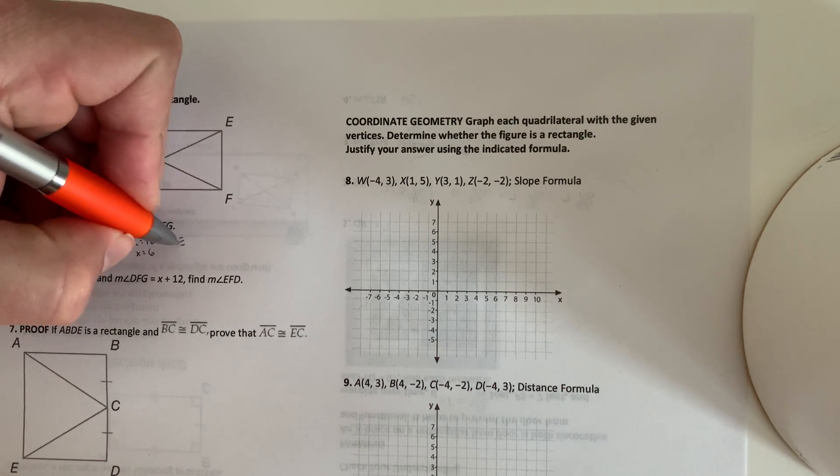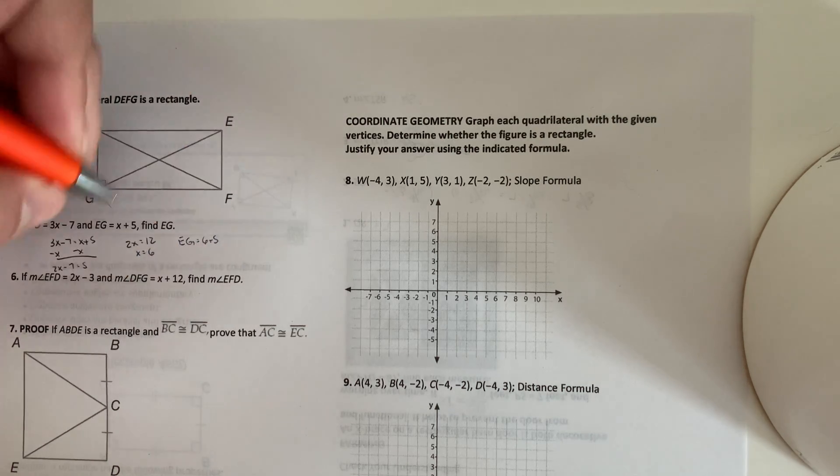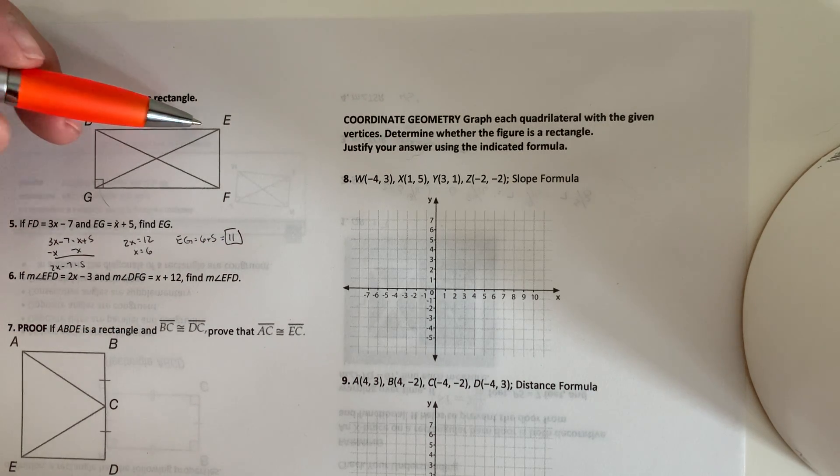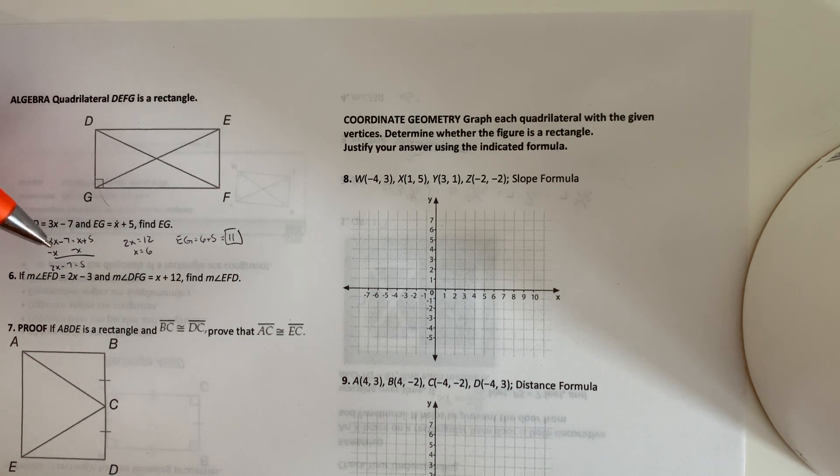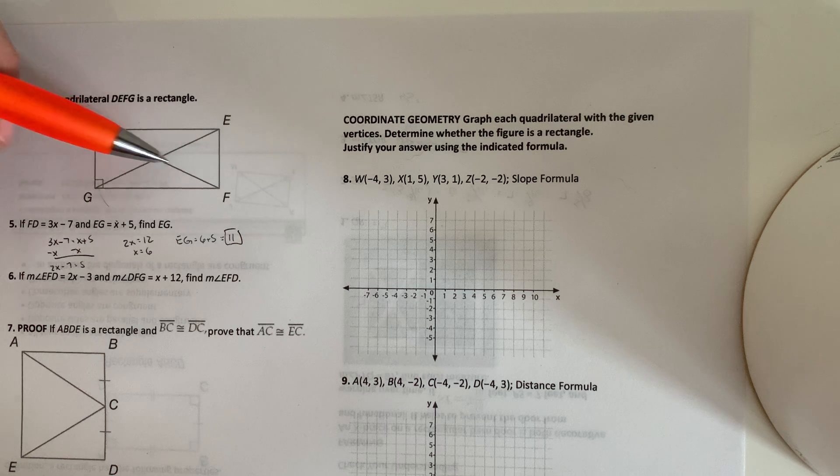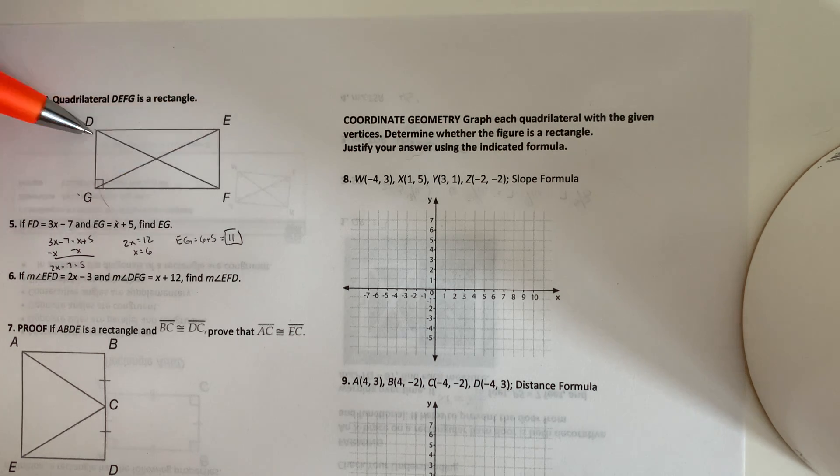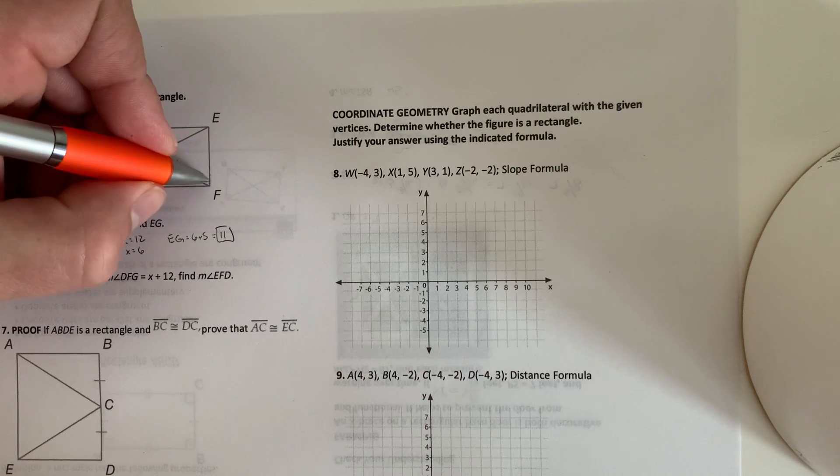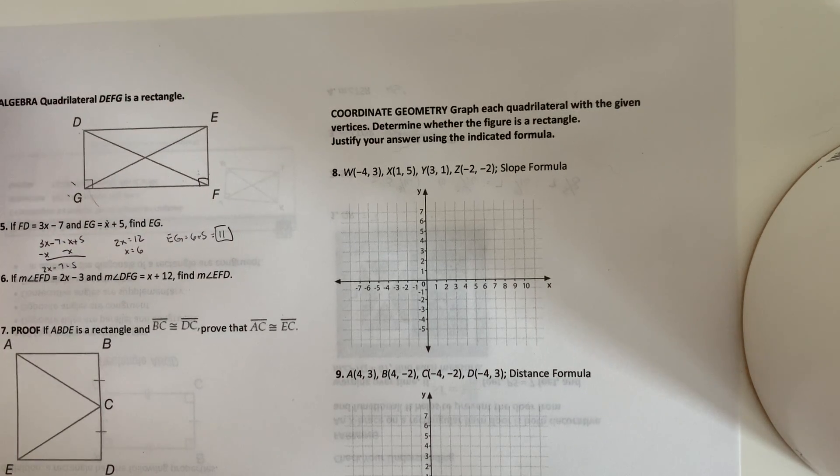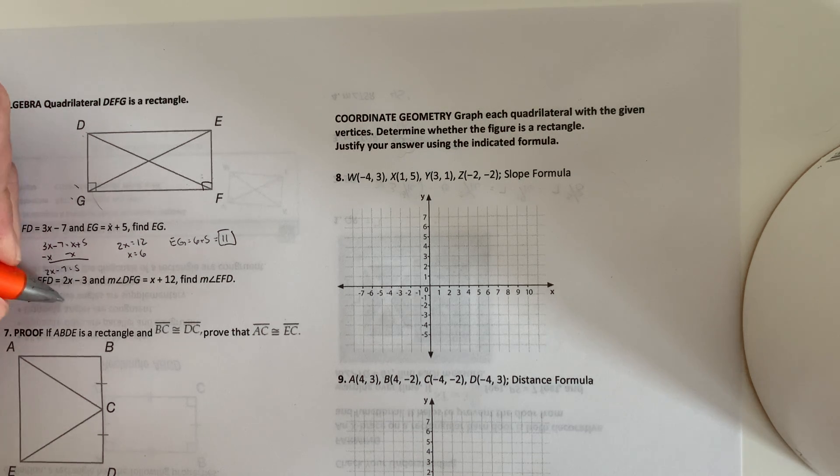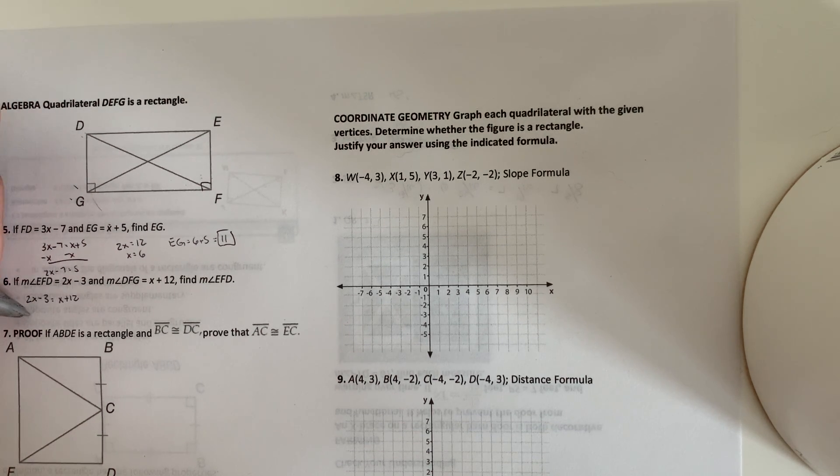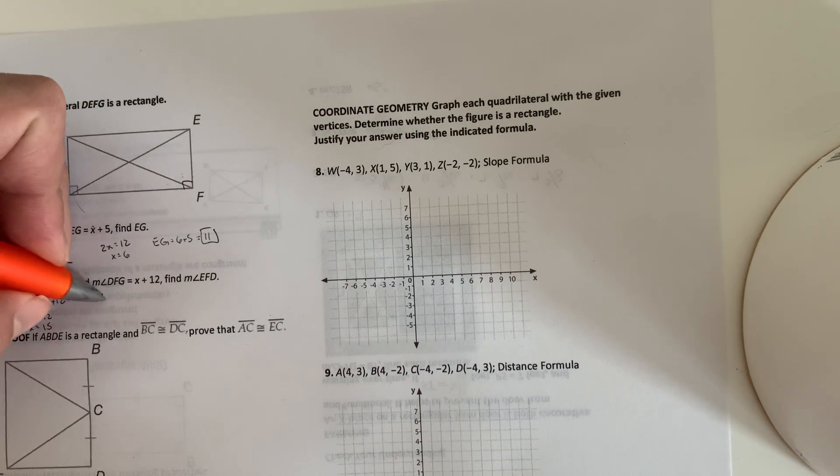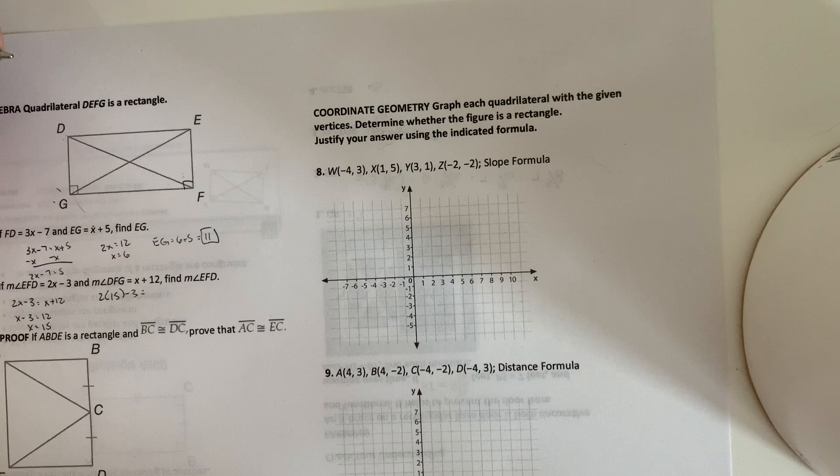I need to find EG. So I've got 6 plus 5. I'm going to plug it in for the X, which is equal to 11. And then angle EFD, EFD is right here. And that's 2X minus 3. And then DFG, DFG. I'm sorry. It's EFD. So it's this angle. And then DFG, which is this angle right here. And we know that every angle on a rectangle is 90 degrees. So we're going to do 2X minus 3 plus X plus 12 equals 90. So we'd have X minus 3 equals 12. So X will equal 15. We need to find EFD. So we have 2 times 15 minus 3. 30 minus 3 is 27.